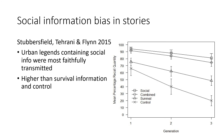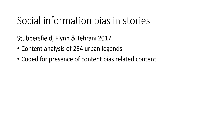We found that urban legends containing social information — those which were either the social information legends or those that combined social information and survival information — were the most faithfully transmitted along the chains, as you can see in this figure. Those that contained survival information had more faithful transmission than the control material, but were still significantly less well transmitted than those legends which contained some kind of social information. This suggests that the process of transmission benefits content which has some kind of social relevance.